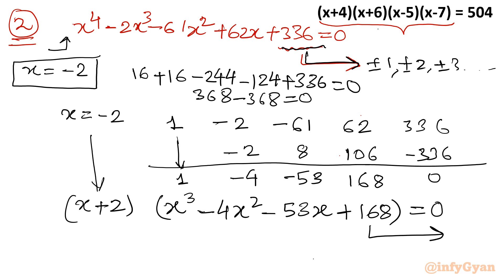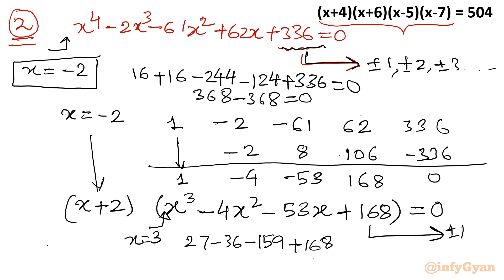Applying the rational root theorem again to the cubic x³-4x²-53x+168, we test factors of 168. Trying x = 3: substituting gives 27-36-159+168 = 195-195 = 0. So x = 3 is a solution of this cubic equation.